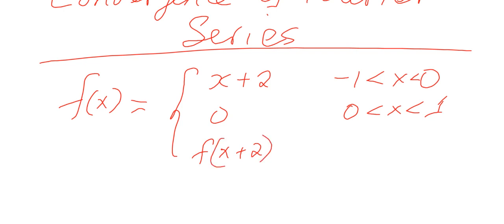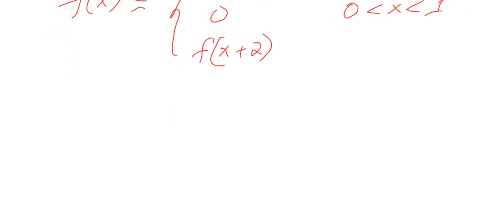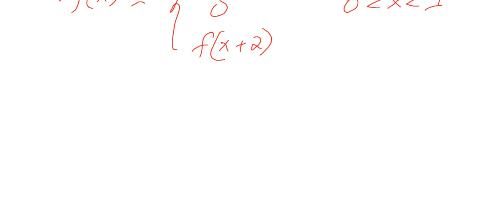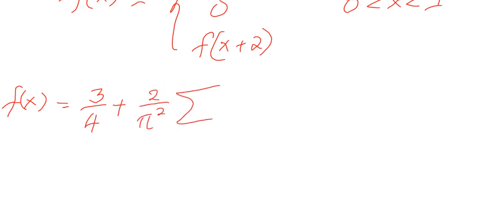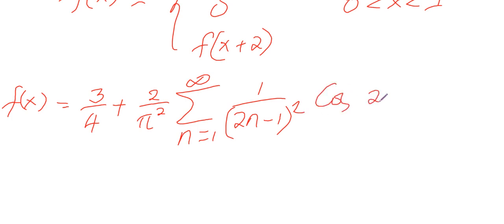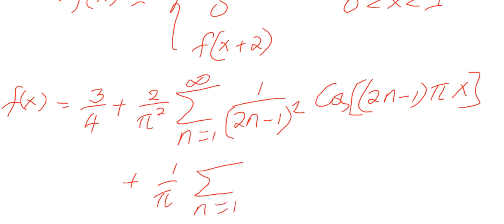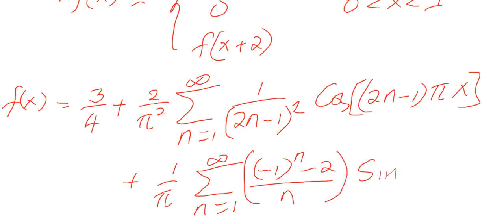For this function, the Fourier series takes the form: f(x) = 3/4 plus (2 over pi squared) times the sum from n=1 to infinity of (1 over (2n−1)²) times cosine((2n−1)πx), plus (1 over pi) times the sum from n=1 to infinity of ((−1)^(n−1) − 2) over n, all multiplied by sine(nx).